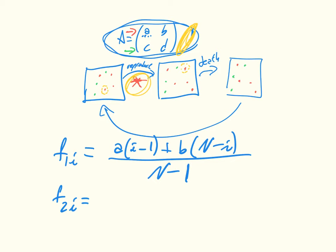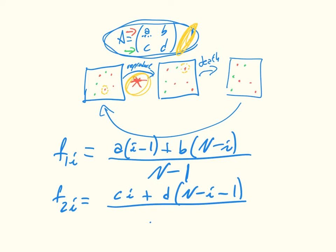F2I is the fitness of individuals of the second type given that there are I individuals of the first type. That's going to be C times I, because an individual of the second type will meet I individuals of the first type getting C. Then they'll get D, N minus I minus one times. We divide all that by N minus one. These are our fitnesses.